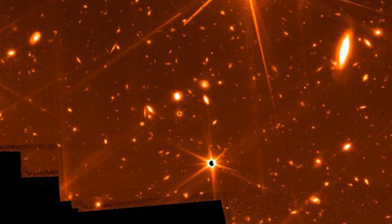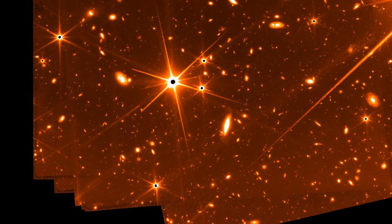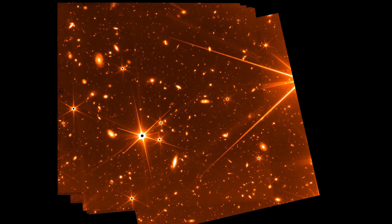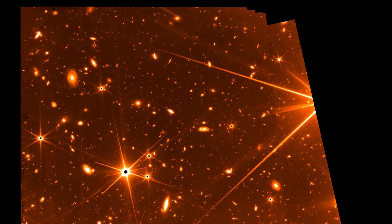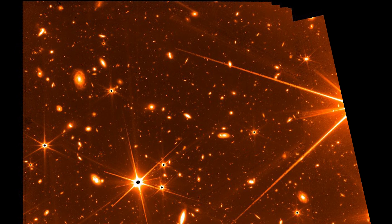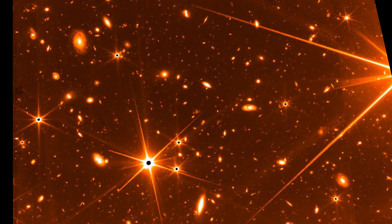This engineering image represents a total of 32 hours of exposure time at several overlapping pointings of the Guider 2 channel. The observations were not optimized for detection of faint objects, but nevertheless, the image captures extremely faint objects, and is, for now, the deepest image of the infrared sky.